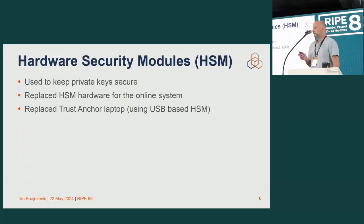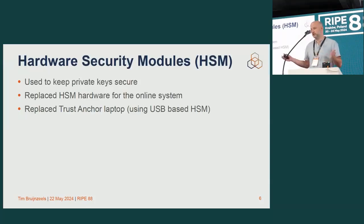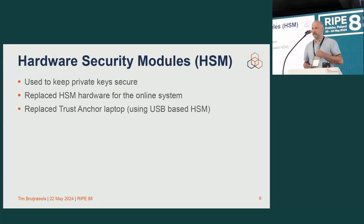Other work that we've been doing: our hardware security modules, HSMs, are essentially used to keep keys private and to provide a good source of random. We use them extensively. Our trust anchor uses them, but also our online system relies on HSMs — meaning, for example, that the keys in the database and in backups are not usable by others. We needed to replace the hardware for the online system, and we needed to replace the laptop that we use for offline signing. That also involves a lot of testing with the USB-based HSM that we use.